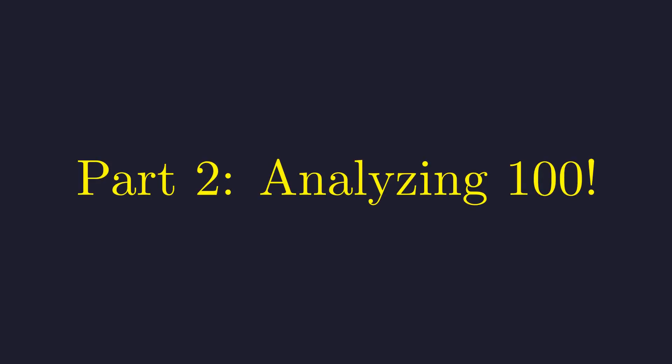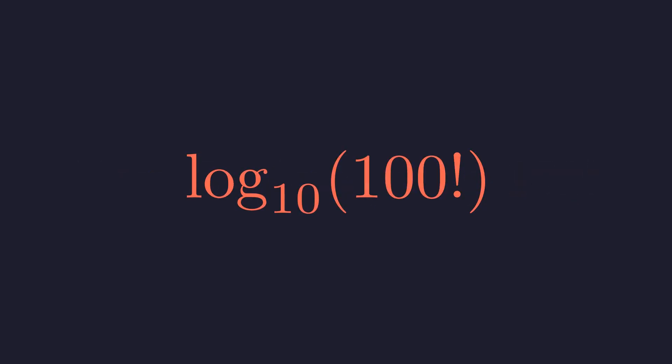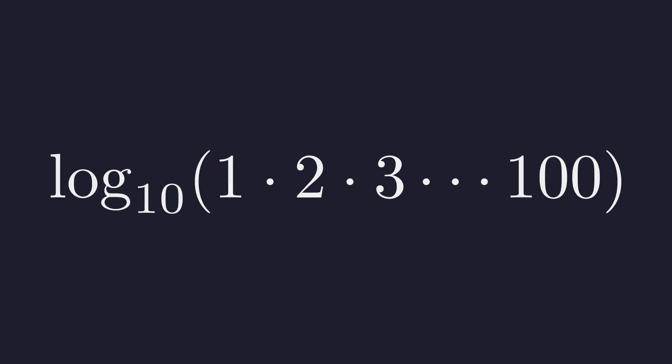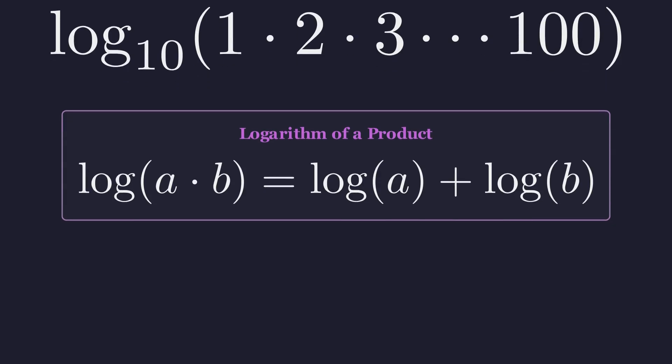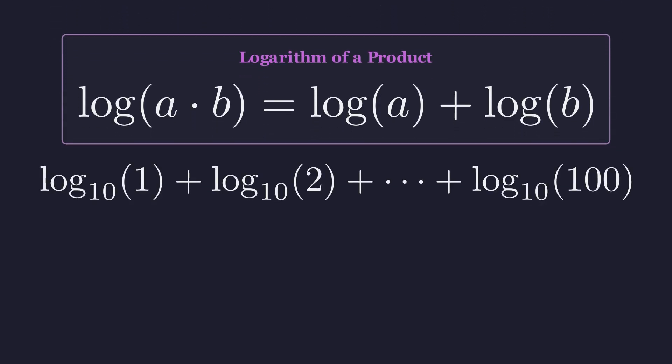Alright, now for the interesting part. 100 factorial. We need the logarithm of 100 factorial. Let's expand what this factorial actually means. It's 1 times 2 times 3, all the way up to 100. Now, here's another key property of logarithms. The log of a times b equals the log of a plus the log of b. The logarithm of a product becomes a sum. So this big product breaks down into a sum of logarithms. We can write it in summation notation as the sum of log n, where n goes from 1 to 100.